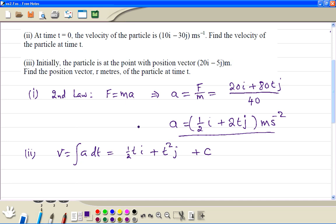We are told when t equals 0, velocity equals 10i minus 30j. At t=0, this is nothing, plus c.